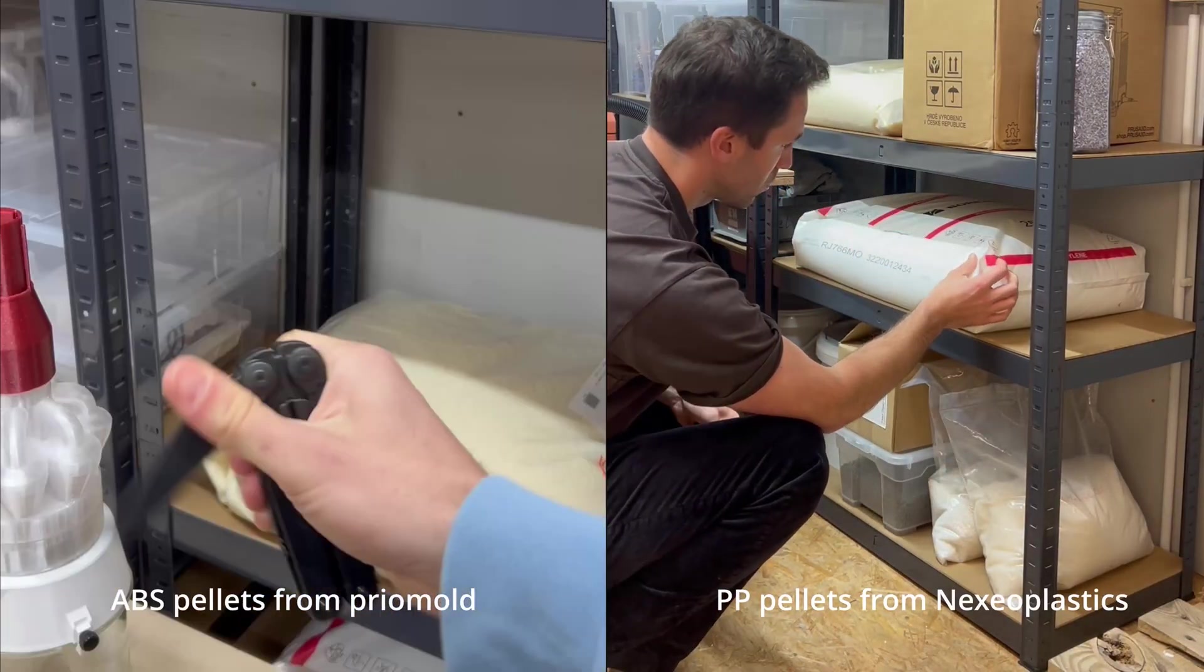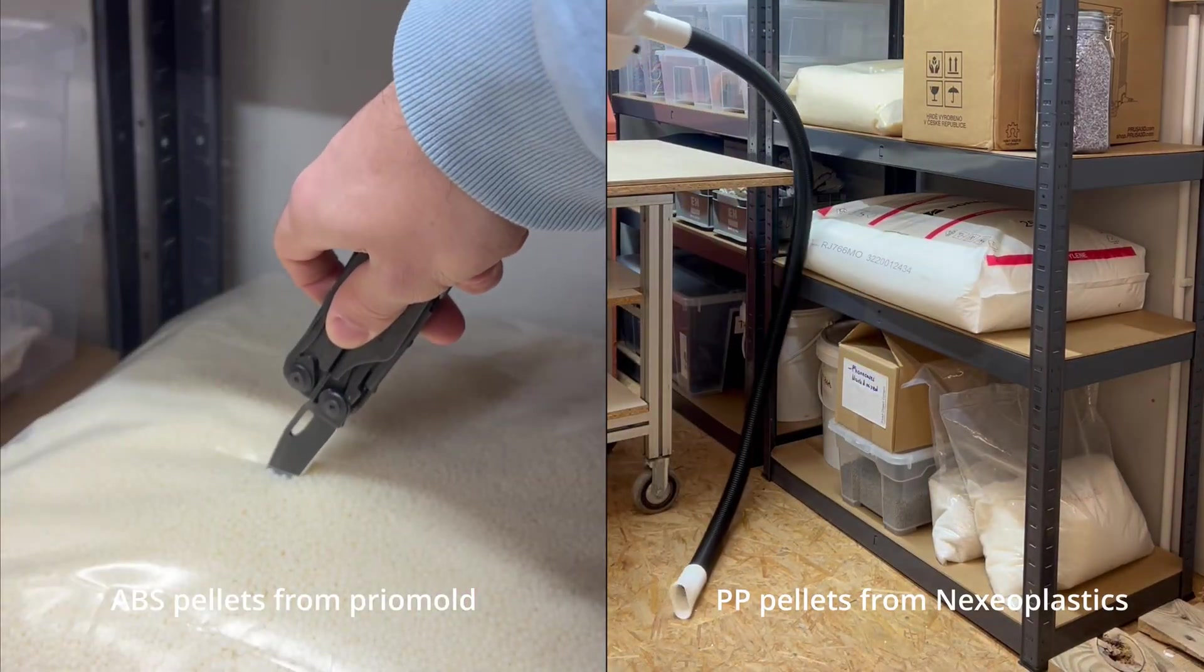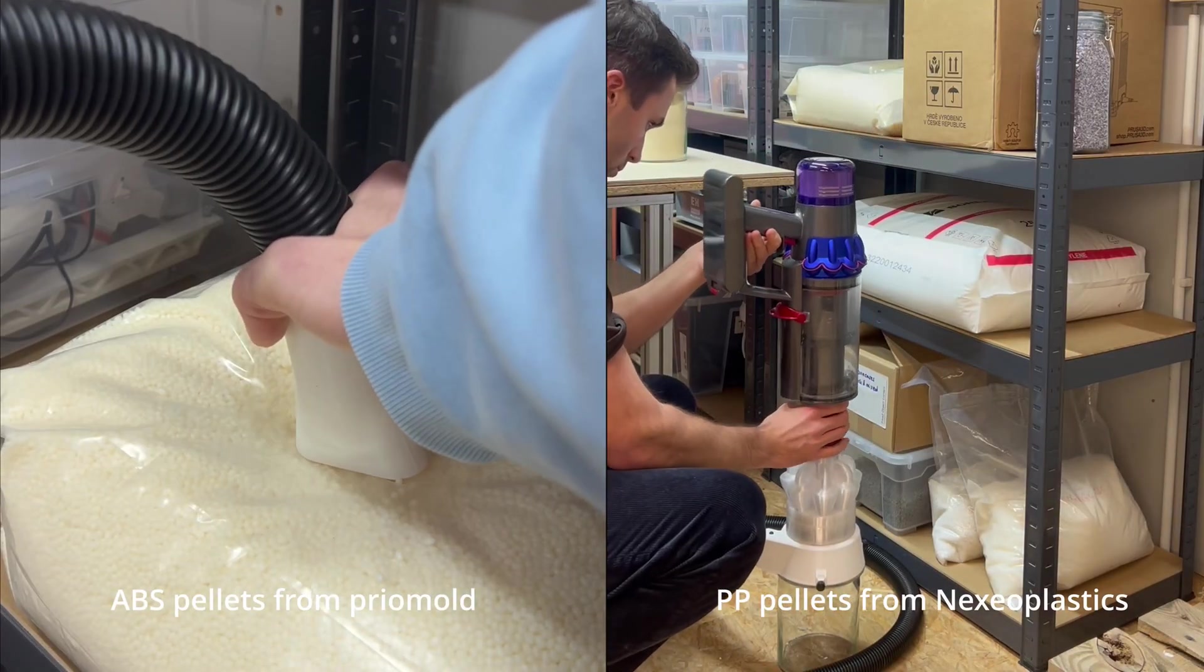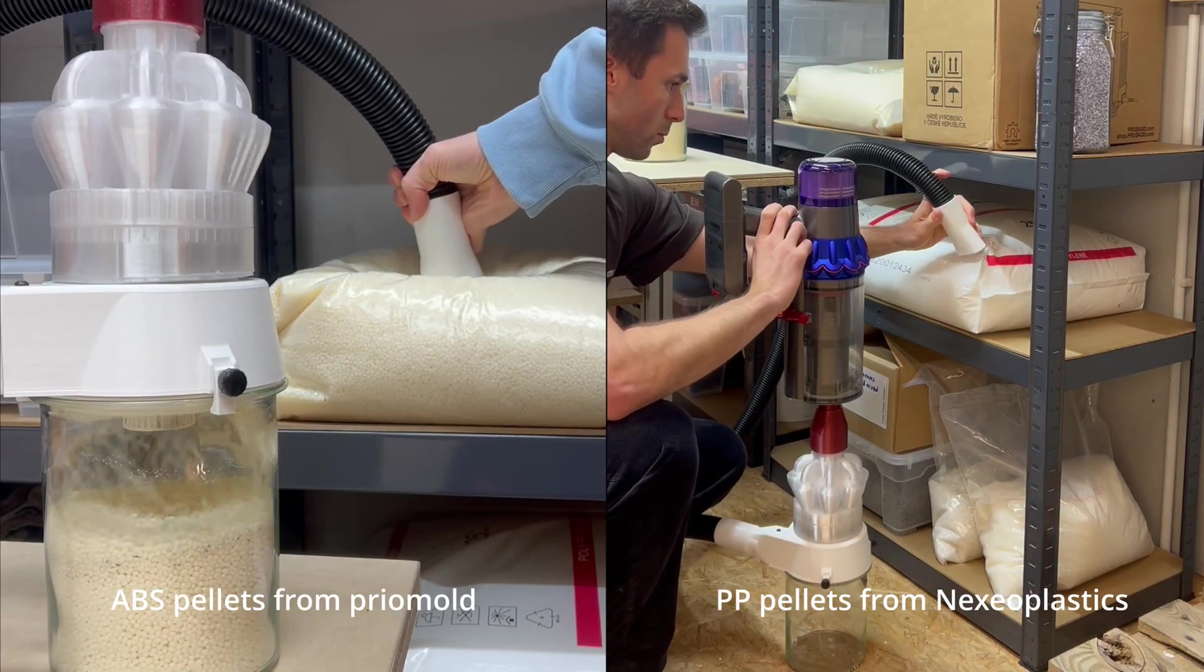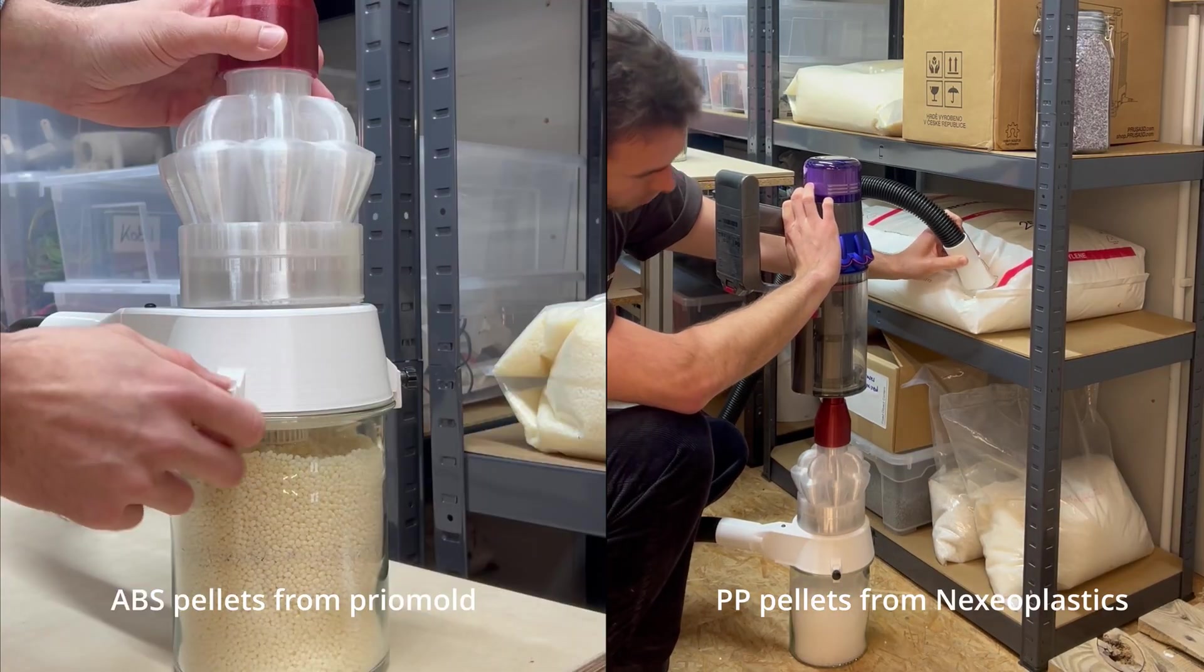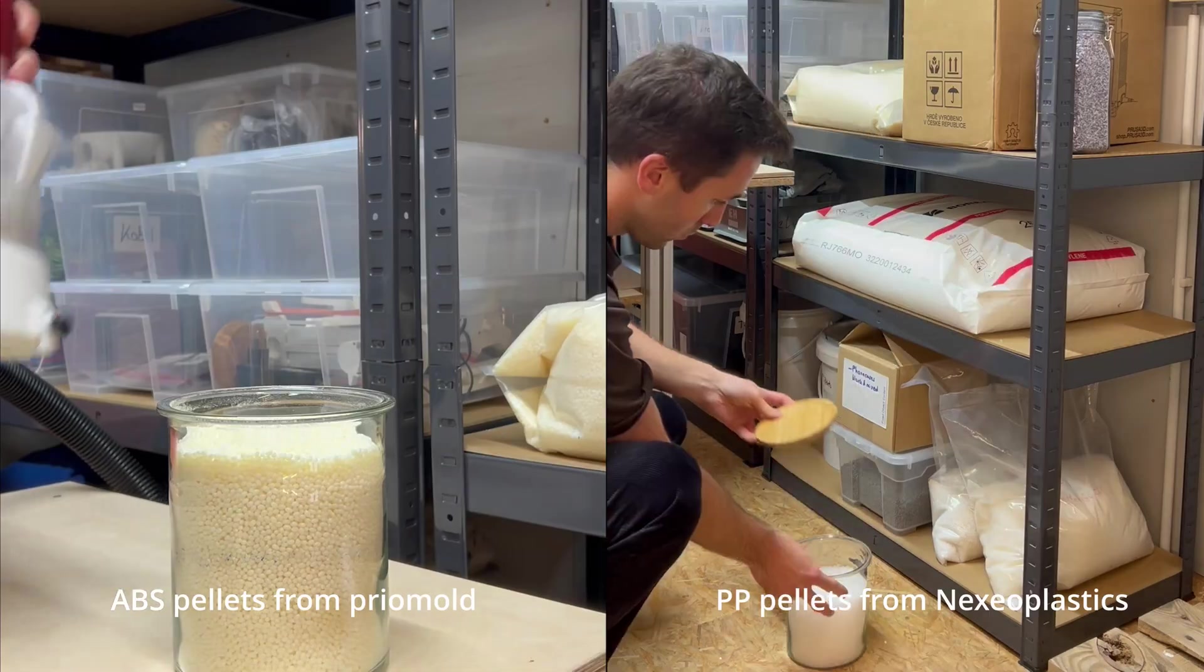I also recently found another cool use for the cyclone which is extracting pellets from these big bags they come in. I run tests on the molder with these pellets and scooping them out of the bags can get pretty messy. Simply pinching the bag with a small cut and sucking the material out is much easier and faster.